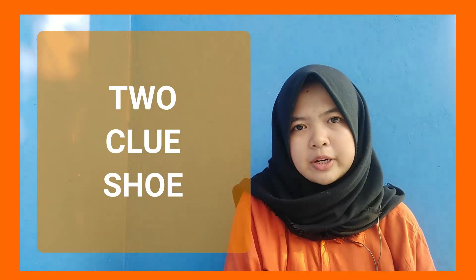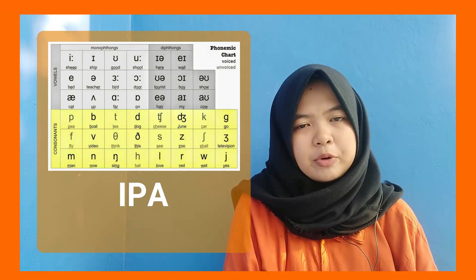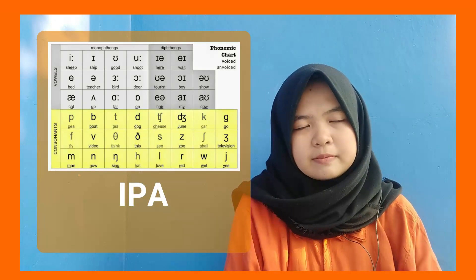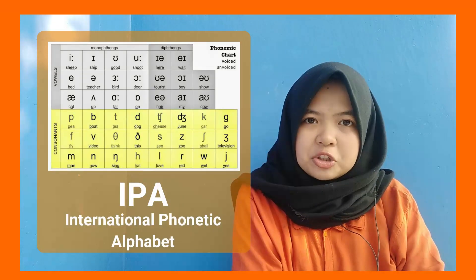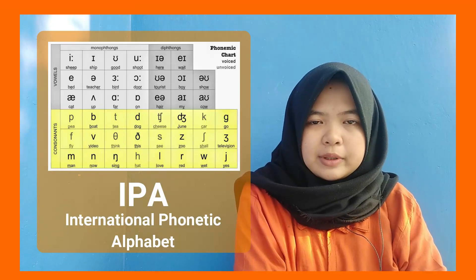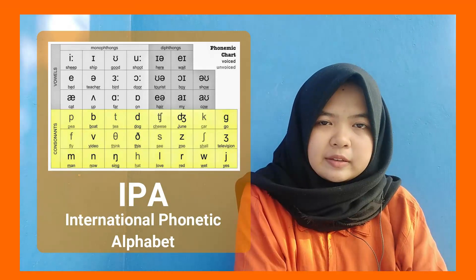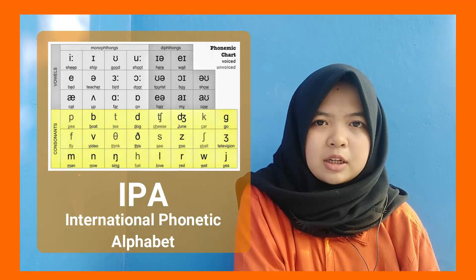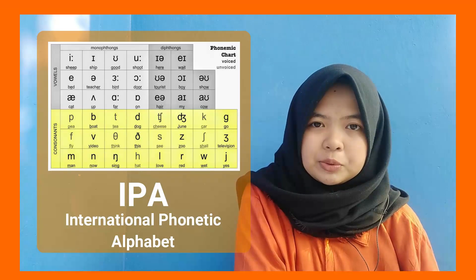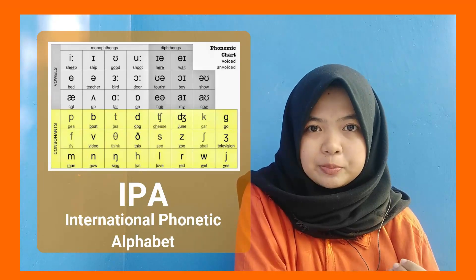So how do you know the way to pronounce a certain word? IPA will help you with that. IPA is an International Phonetic Alphabet, and all of these symbols will tell you how to pronounce a certain word.